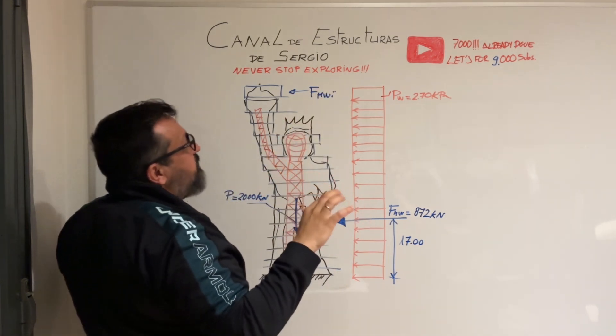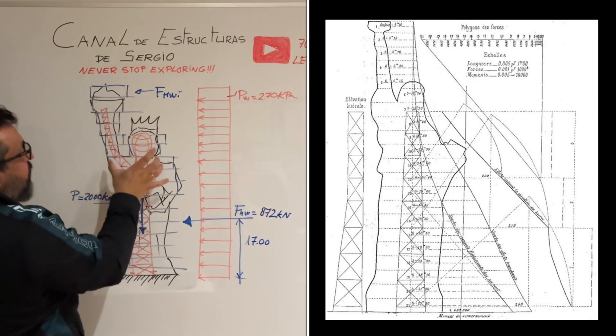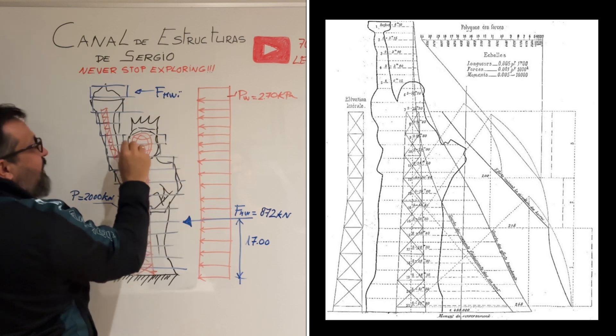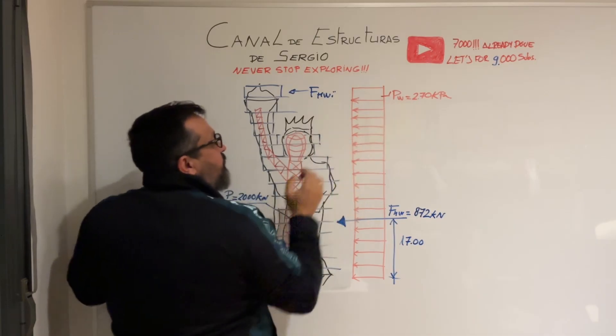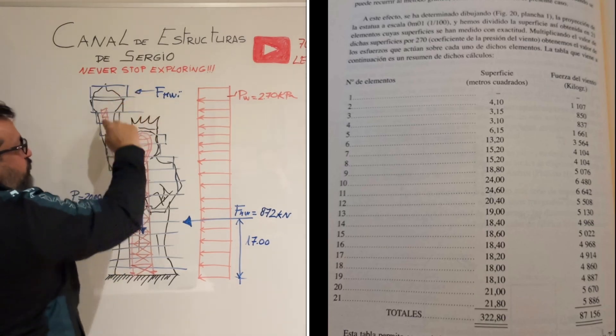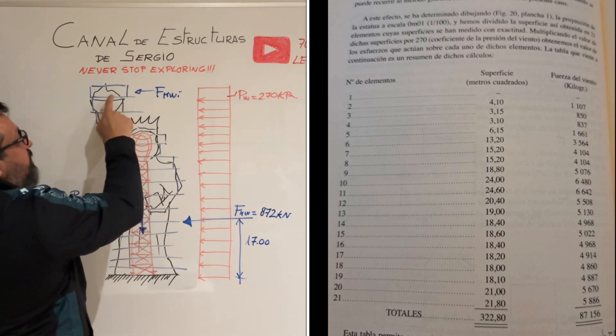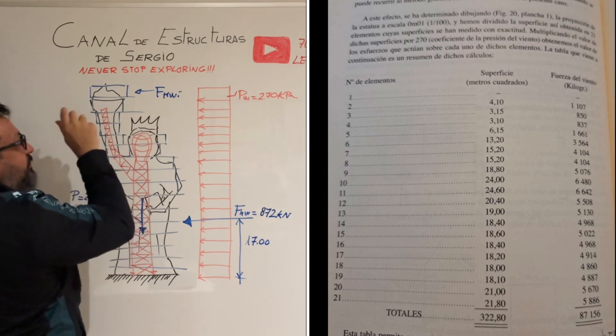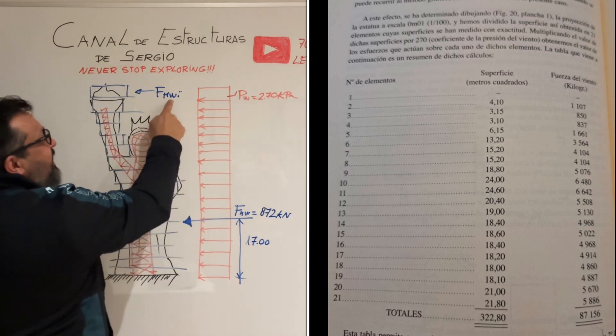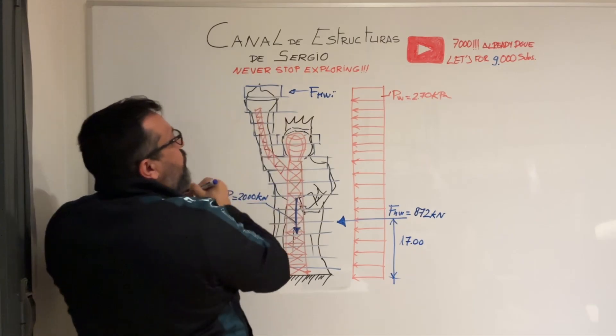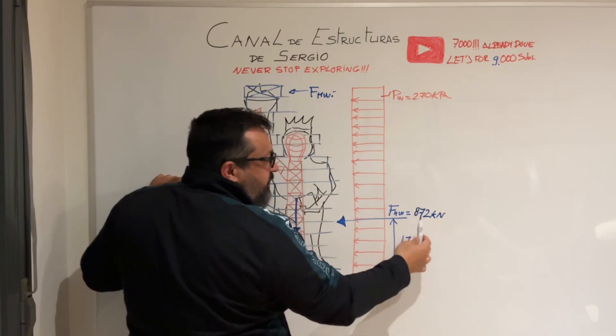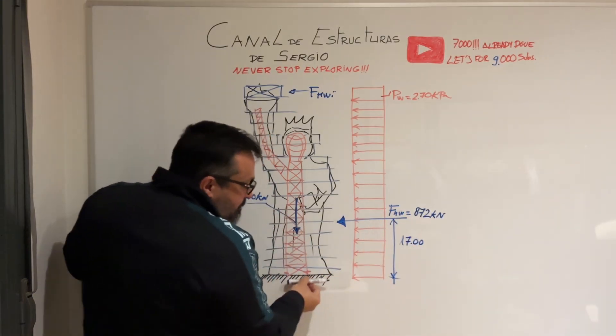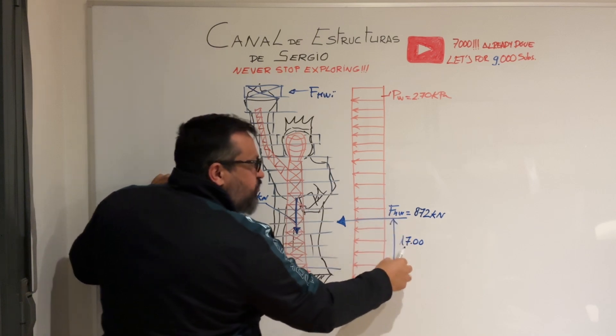What the people of the Eiffel team did was divide the statue into several areas where they calculated the surface area exposed to wind, until they got 21 areas. What they did was multiply the area for each of these little rectangles per wind pressure, and then they got a horizontal force that is applied at the center of each surface. If we get a summary for all of these areas, we get a wind resultant equal to 272 kilonewtons that is located from the base of the structure at a height equal to 17 meters.